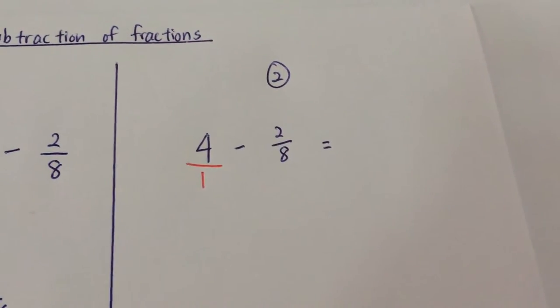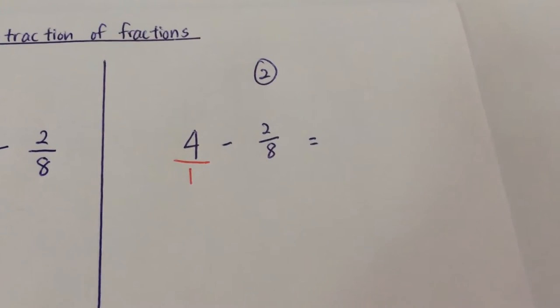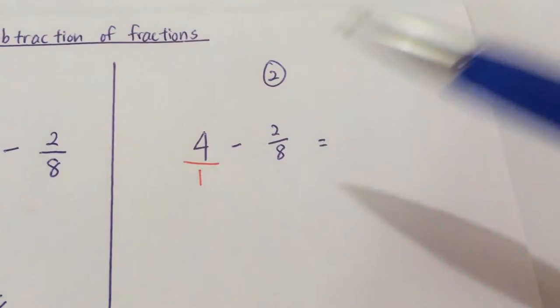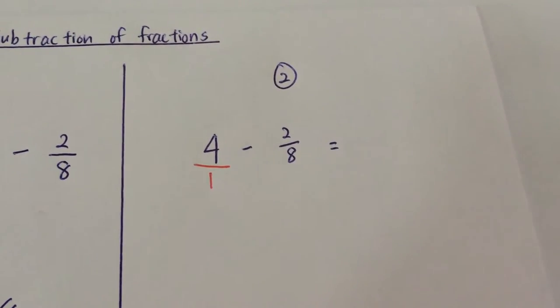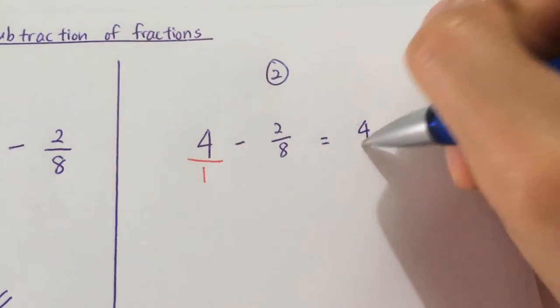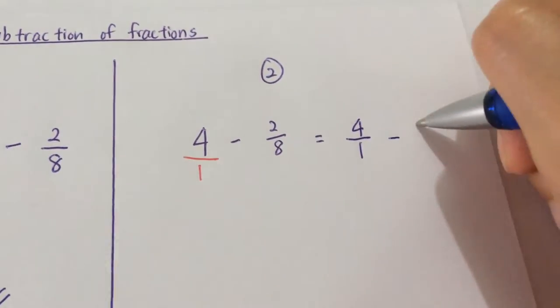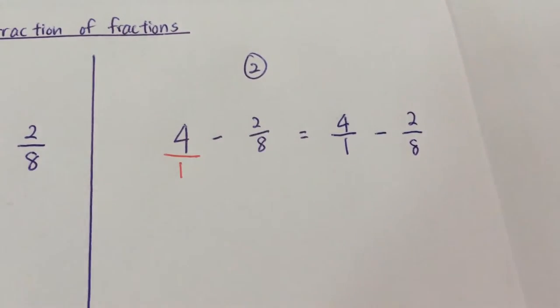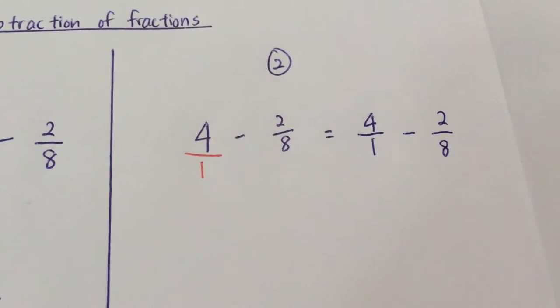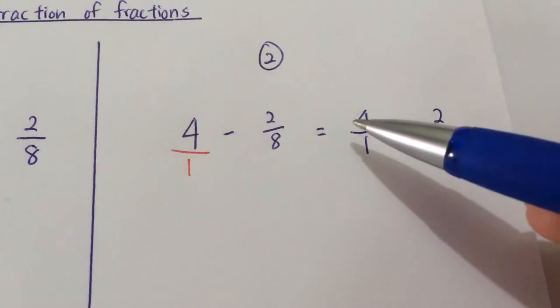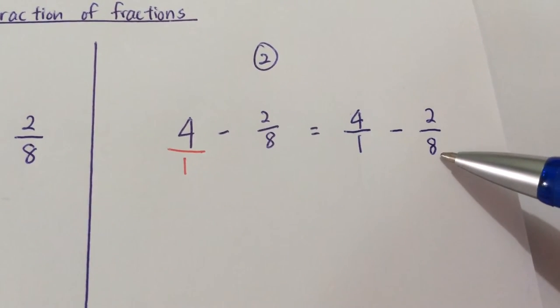Now, a whole number is out of 1. 4 whole is out of 1. Now, I'm going to rewrite it over here so that it's neater. So 4 out of 1 minus 2 out of 8.